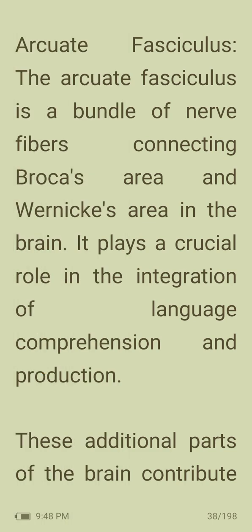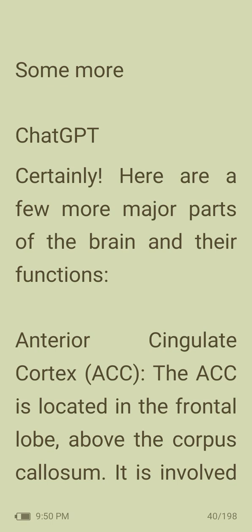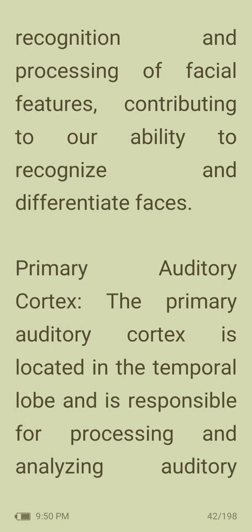Arcuate fasciculus: a bundle of nerve fibers connecting Broca's area and Wernicke's area in the brain, playing a crucial role in the integration of language comprehension and production. Anterior cingulate cortex: located in the frontal lobe above the corpus callosum, it is involved in various cognitive processes including decision making, error detection, emotion regulation, and conflict monitoring. Fusiform face area (FFA): a region in the temporal lobe specifically in the fusiform gyrus, specialized for facial recognition and comprehension of facial features, contributing to our ability to recognize and differentiate faces.